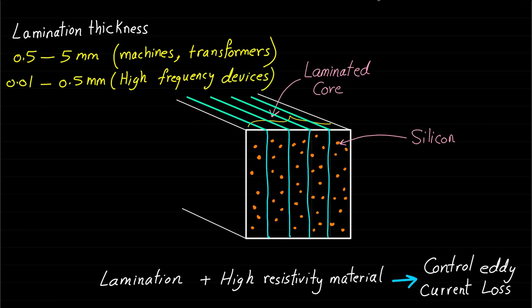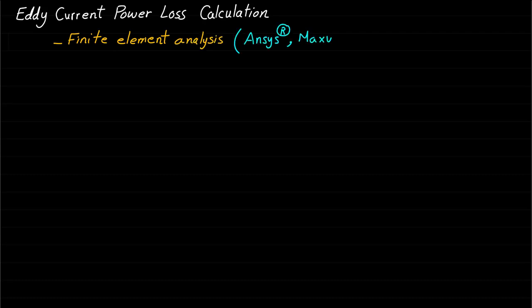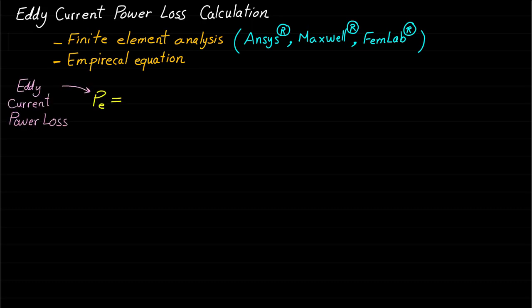Eddy current power loss can be calculated by two methods. The first method is by using finite element analysis using software such as ANSYS, Maxwell, and COMSOL. The second method is by using the following empirical law: P_E equals V_core multiplied by K_E multiplied by f to the power 2 multiplied by B_max to the power 2, and the unit is Watt.